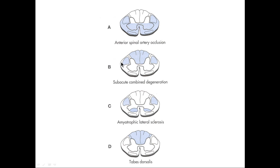Other degenerative spinal cord conditions: a stroke of the anterior spinal artery can wipe out the corticospinal tract and ventral horn, giving upper and lower motor neuron signs. Subacute combined degeneration involves loss of the corticospinal tract — upper motor neuron signs — plus loss of the dorsal column pathway, resulting in loss of two-point discrimination, vibration, and proprioception. ALS involves loss of both the corticospinal tract and ventral horn, causing massive paralysis. Tabes dorsalis, due to syphilis, involves loss of only the dorsal funiculi, causing problems with proprioception, vibration, and two-point discrimination.